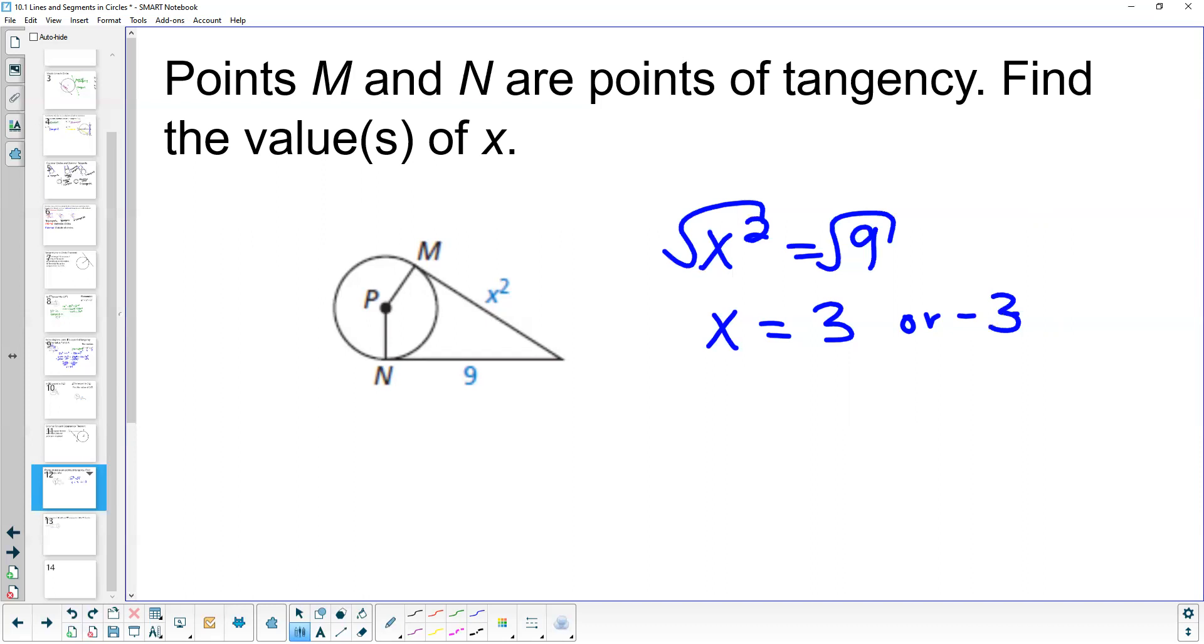Now it's okay for us to say that x is equal to negative 3 here because we're not talking about x as being the distance. We're talking about x squared as being the distance, and if we square a negative number we'd still get a positive number so it still will make that distance positive. So we can keep that in mind there as we look at that.